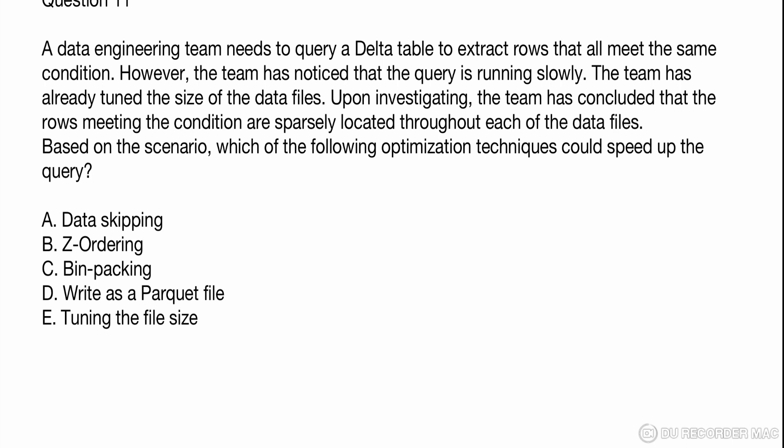Question 11: A data engineer team needs to query a delta table to extract rows, but they are facing performance issues. They have already fine-tuned the size of the data files and concluded that rows meeting the conditions are sparsely located — records are spread across many different files. The options are: A) data skipping, B) Z-ordering, C) bin packing. Bin packing is about tuning the file size, which is already done, so it won't help much.